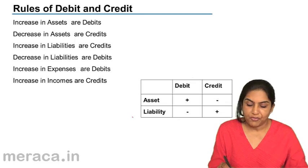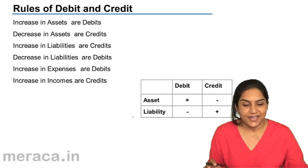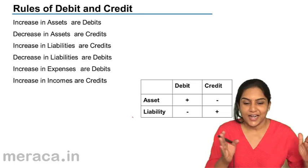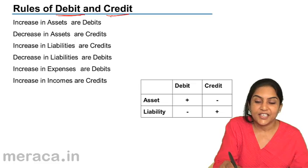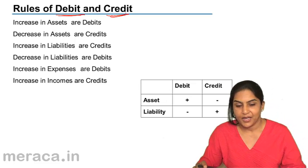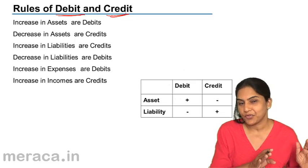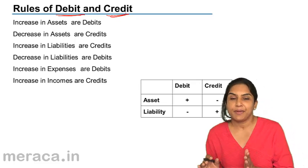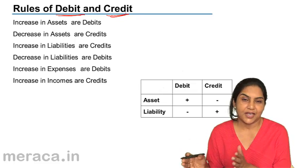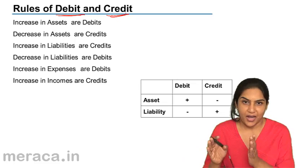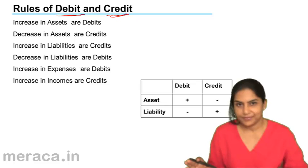What are the rules of debit and credit? What is debit and credit? You might have said left hand side and right hand side. Debit and credit are just terms in accounting. We will call one side debit — that is the left hand side — and the other side credit.